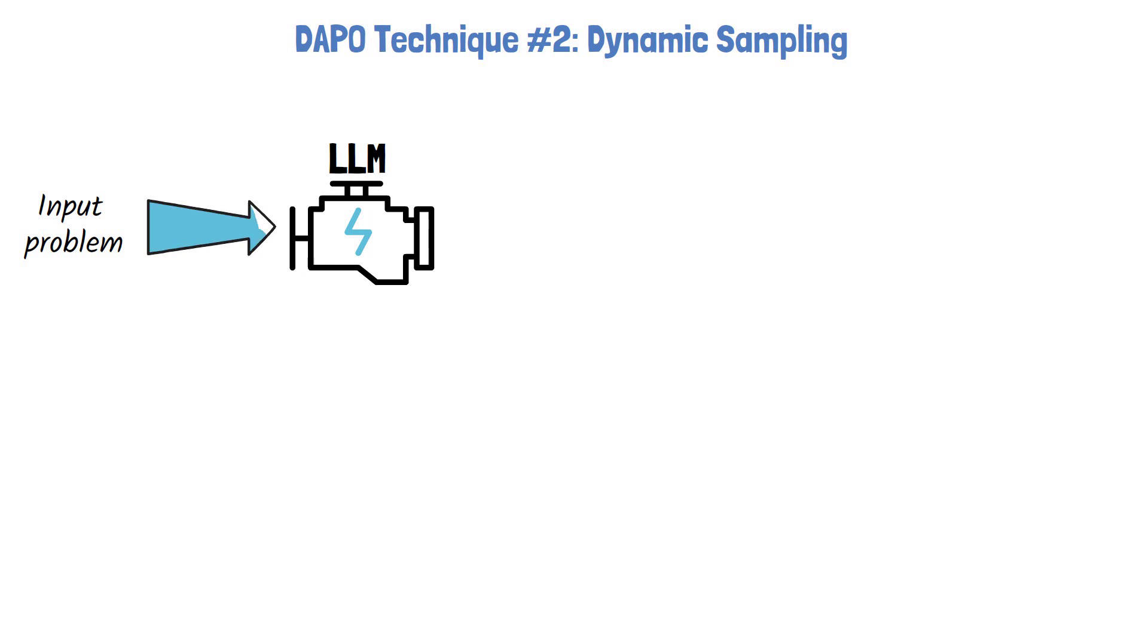Let's now move on to the second change that DAPO applies called dynamic sampling. Let's start with understanding the problem that we try to solve with that. In both GRPO and DAPO, given a question, multiple responses are sampled. Each response is assigned with a reward.